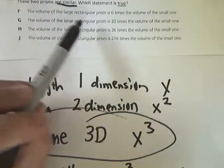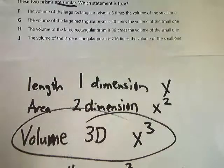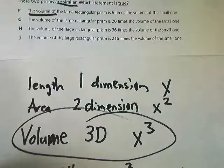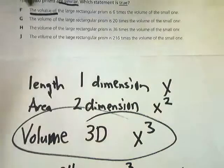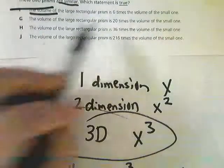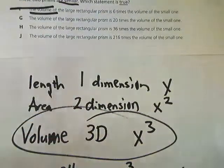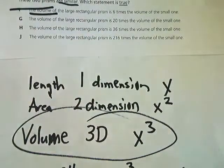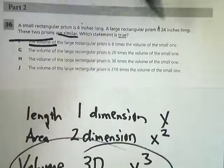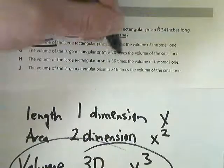So F says the volume of the large rectangular prism is 6 times. The volume isn't 6 times. The length is 6 times, so that's not it. In G, the volume is 20 times. I guess they just subtracted 24 minus 4. They took 24, they subtracted 4. That's got nothing to do with anything. You don't subtract here.